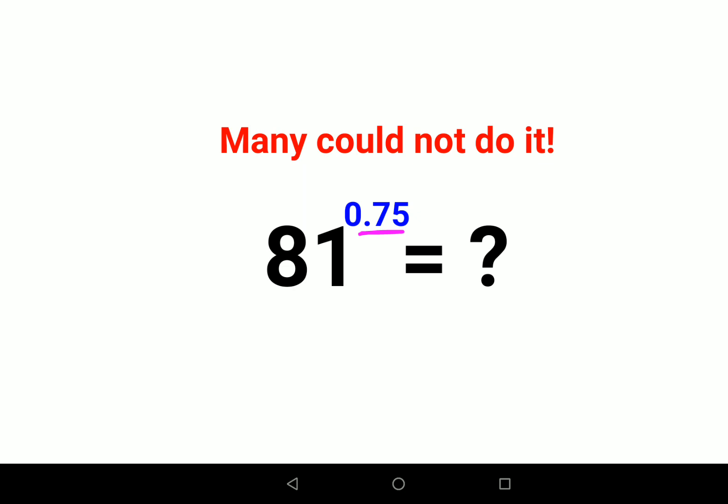So we have 81 raised to 0.75. Now this can very well be written as, let's write the 75 in terms of fractions. This basically gets you, when you divide by 5, you get 15 and 20.